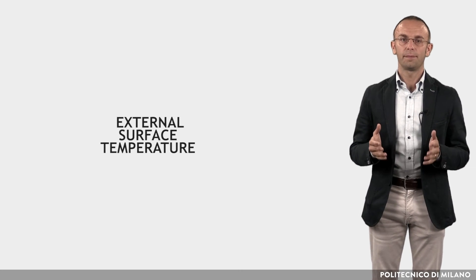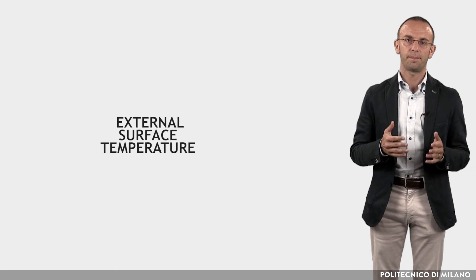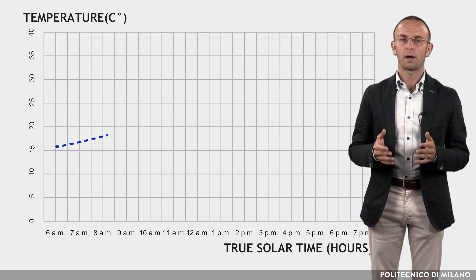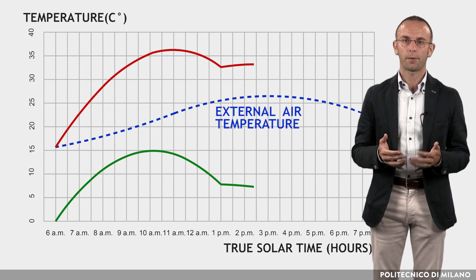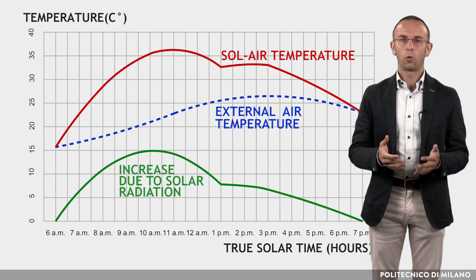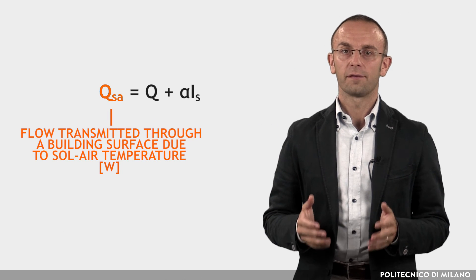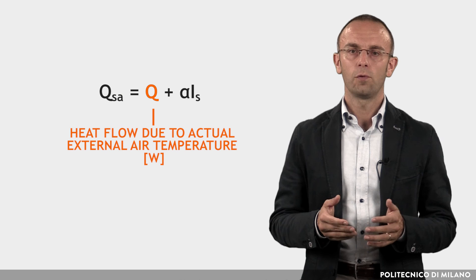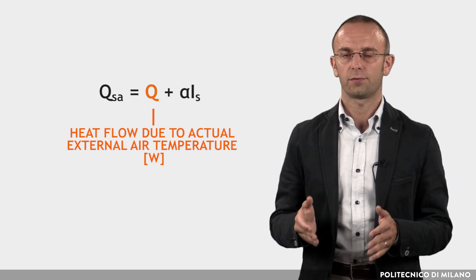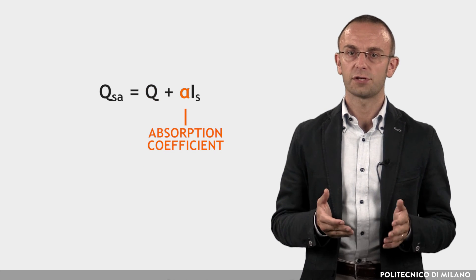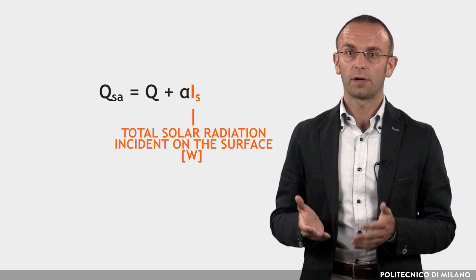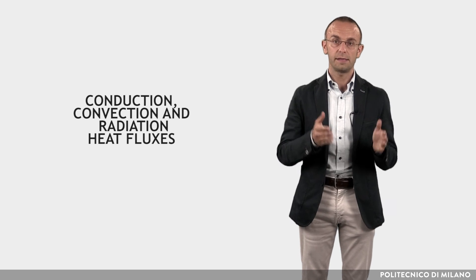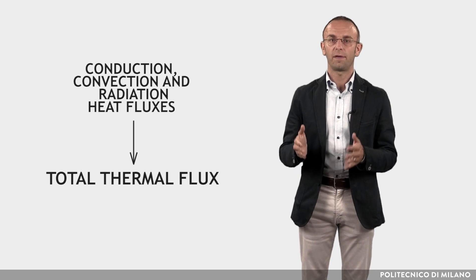When the surfaces of a building are hit by solar radiation, the external surface temperature increases depending upon the incident solar radiation and the absorption of the surface. This phenomenon can be taken into account by virtually increasing the external air temperature to an appropriate value to obtain the same effect. This increased value is called sol-air temperature. The heat flow transmitted through a building surface due to sol-air temperature, QSA, can be calculated with this formula, where Q is the heat flow due to actual external air temperature in Watts, α is the absorption coefficient of the surface (dimensionless), and IS is the total solar radiation incident on the surface in Watts. In conclusion, by calculating the conduction, convection, and radiation heat fluxes, it is possible to evaluate the total thermal flux through a building surface.